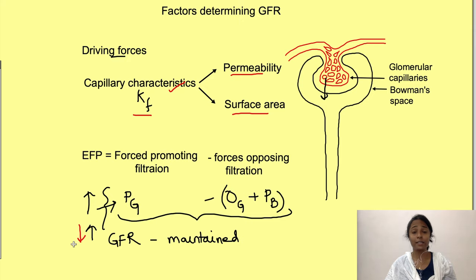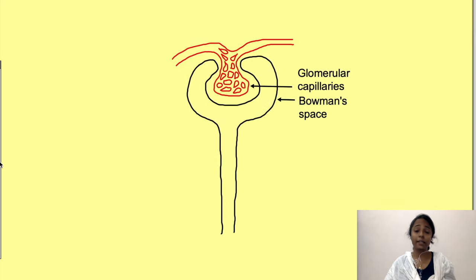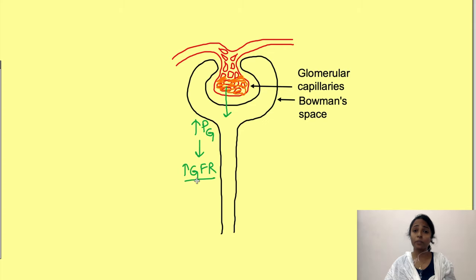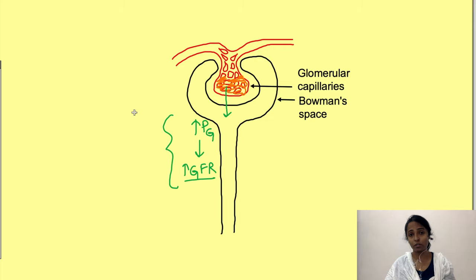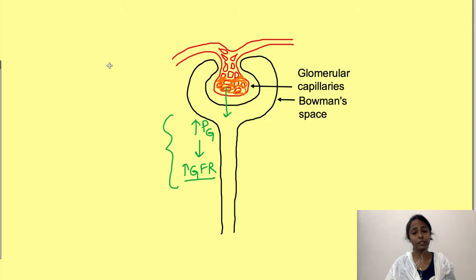Anything which retains blood in the glomerular capillaries will increase the glomerular hydrostatic pressure and hence will increase GFR. So the mechanisms which tend to change or maintain GFR use this concept — they either increase or decrease the blood retained in these capillaries.